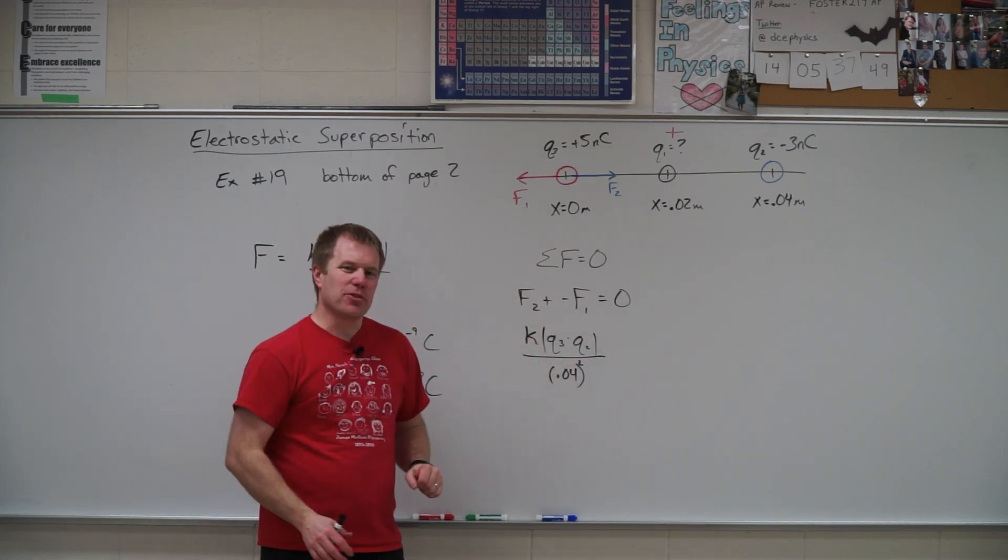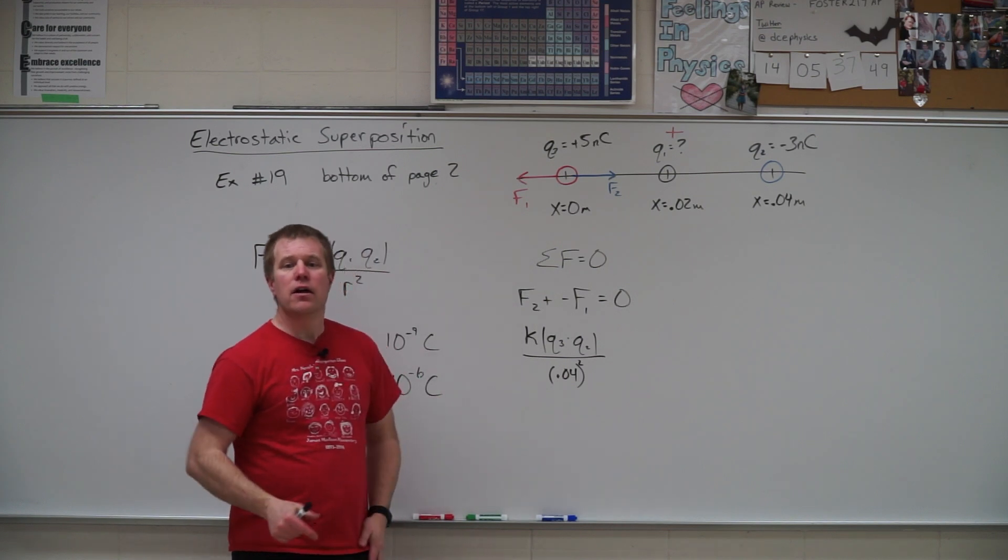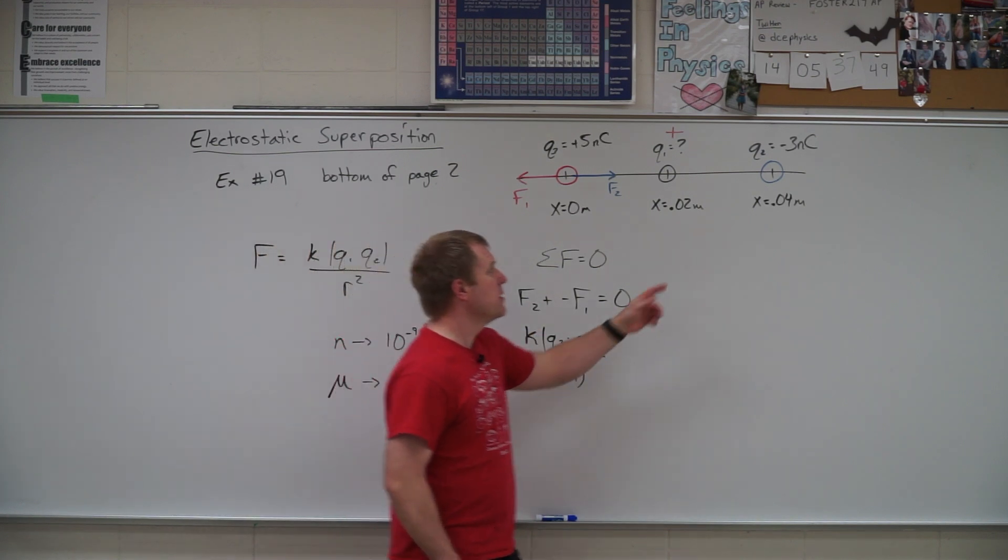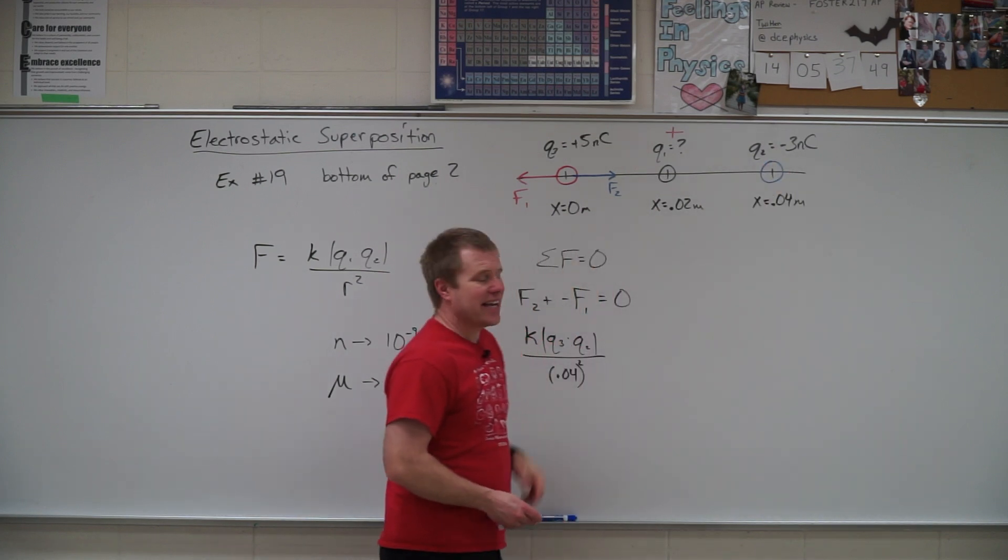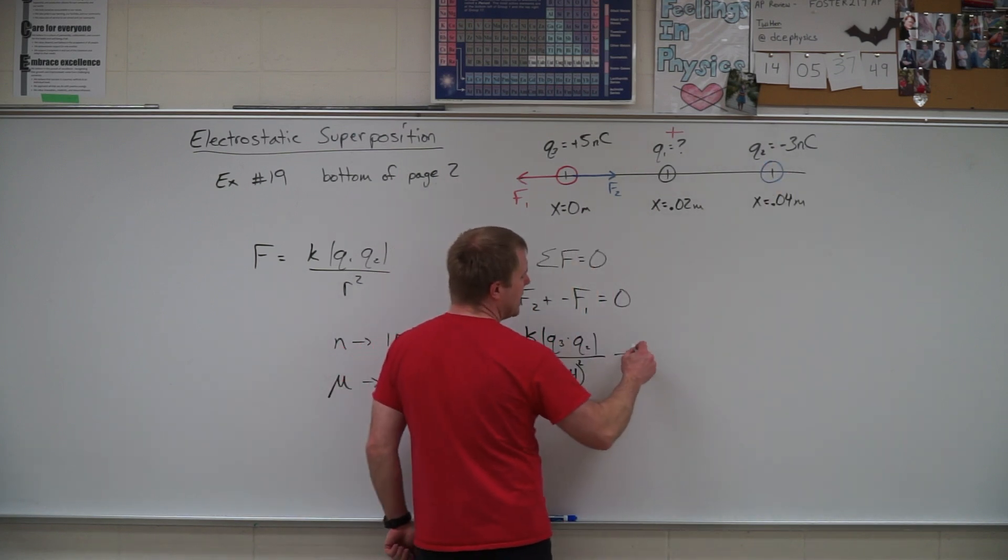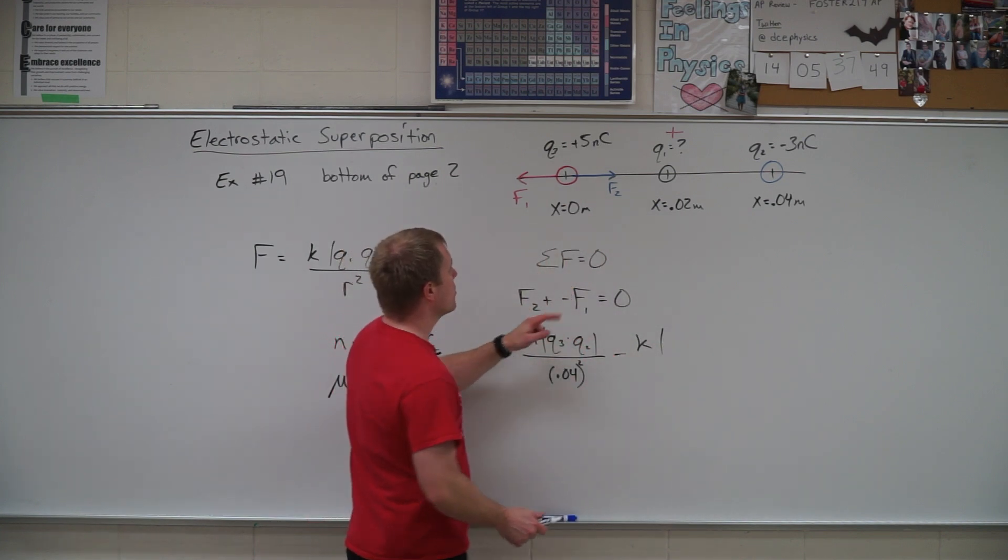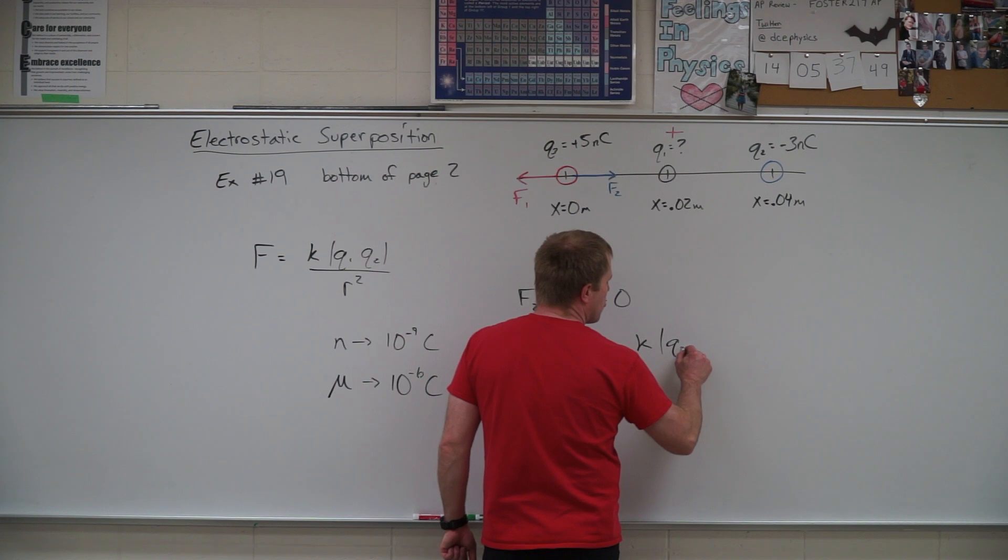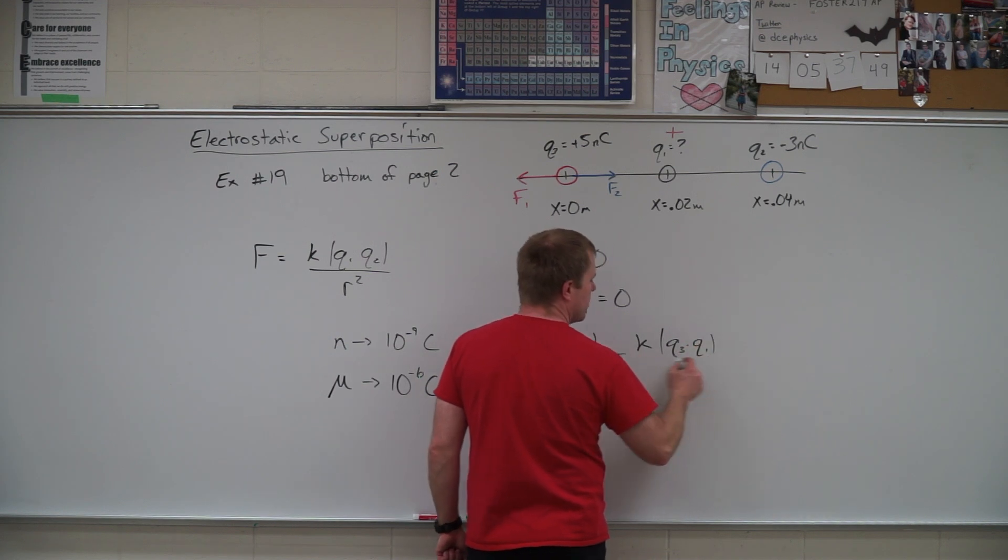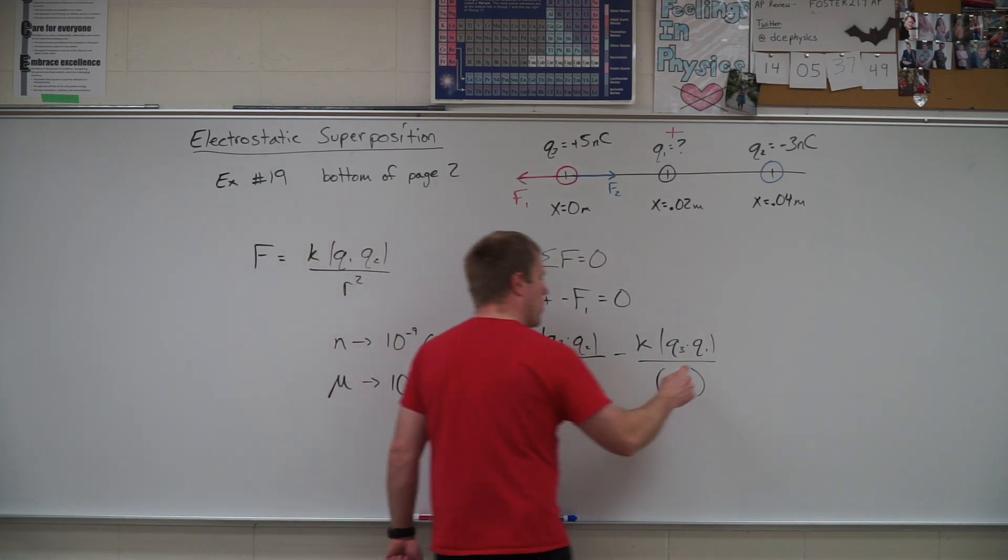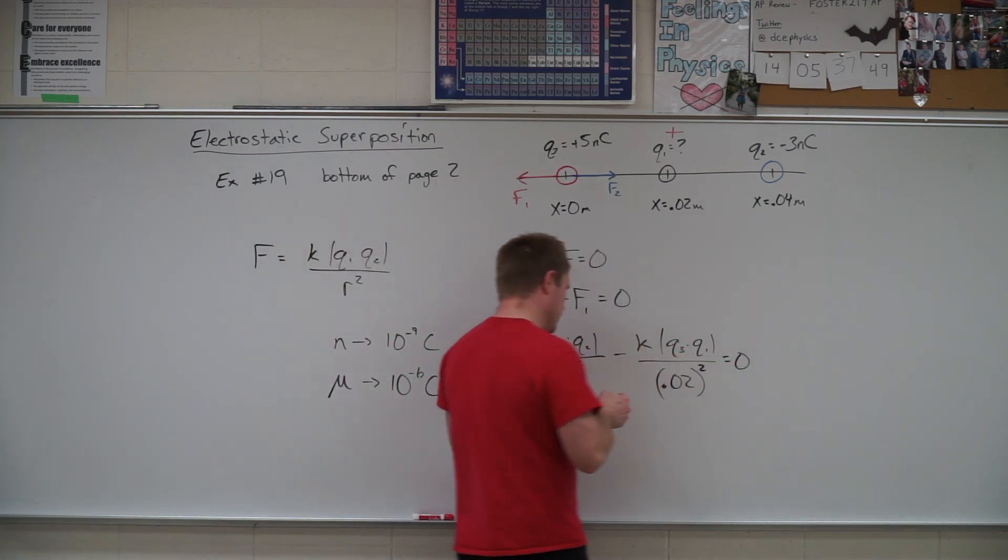Now I'm going to drop this absolute value sign as I go on here, knowing full well that when I get down to substituting my numbers, I'm not going to include that negative sign. And then we have minus f1, which again is going to be k times the two charges involved in force one. And so it's going to be q3 times q1, those are the two charges divided by the difference in their positions, 0.02 squared equals zero.